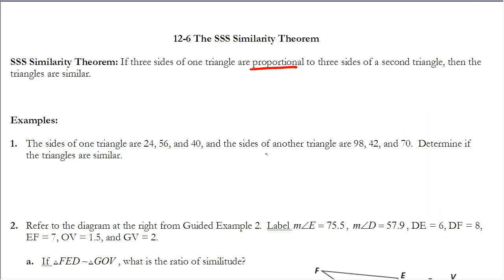Let's take a look at example one here. It says the sides of one triangle are 24, 56, and 40. The sides of another triangle are 98, 42, and 70. Determine if the triangles are similar. So if I can show that the ratios between all three pairs of sides are equal to each other, then I can say that the triangles are similar to each other.